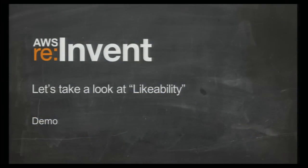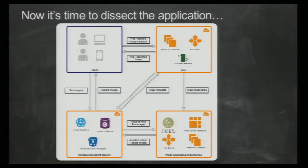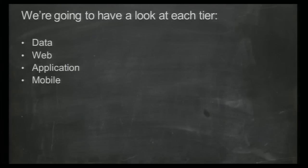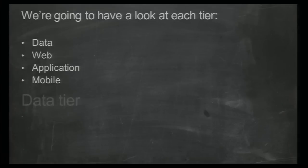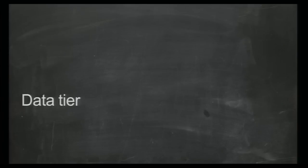Here is the clinical architecture: we've got front-end web servers, a database tier, and an application tier. We're going to dissect this application and go through each tier from the data tier to the web tier to the application tier, then talk about specific things we've done for mobile. We'll start with the data tier. Peter Mark is our data architect, so he'll walk you through why we made those decisions.